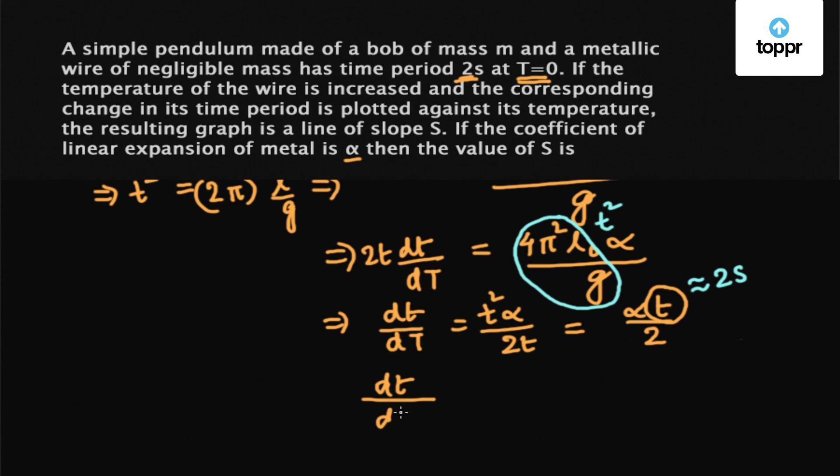such that dt/dT = α×2/2. Now dt/dT is nothing but S, which is the slope, so the slope S comes out to be α.